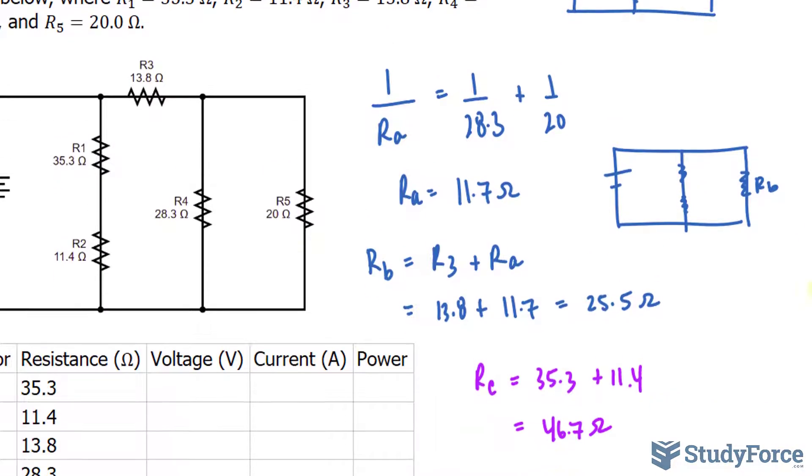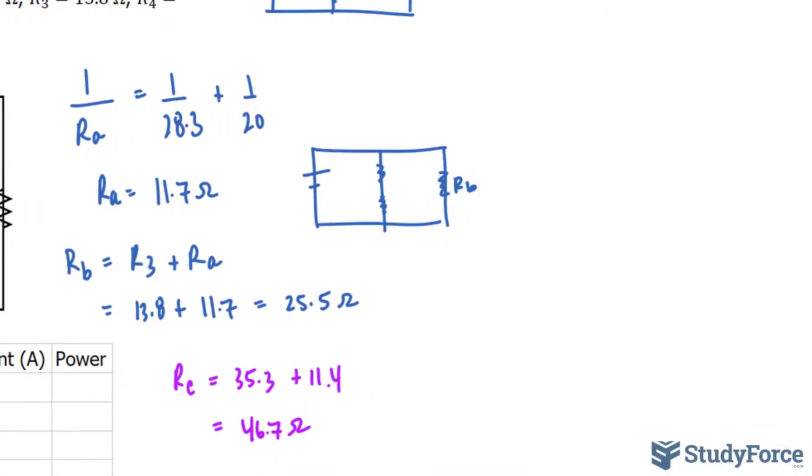Again, I will draw the brand new circuit, where we have one resistor here, and another one right here, R sub B. Remember, this one is R sub C. Notice that they're now in parallel, so we'll have to combine them using that formula we used earlier.